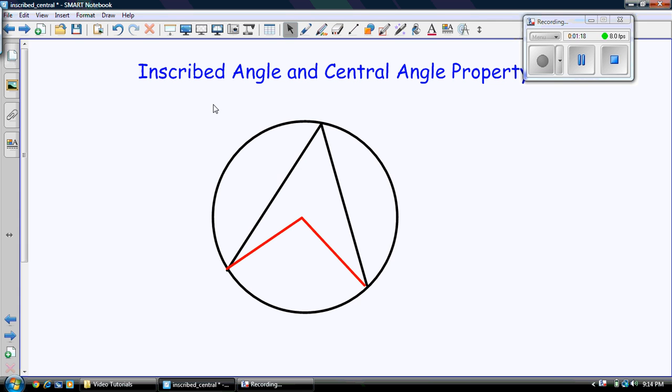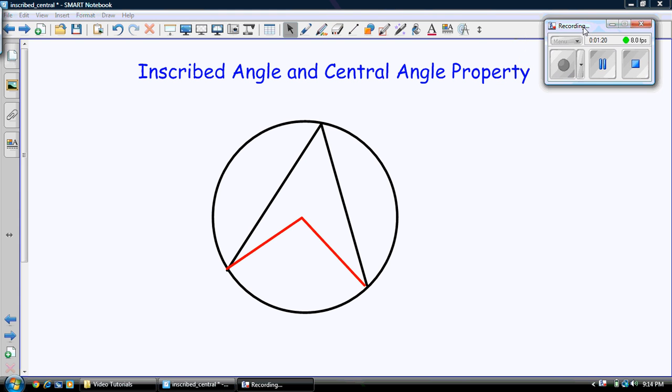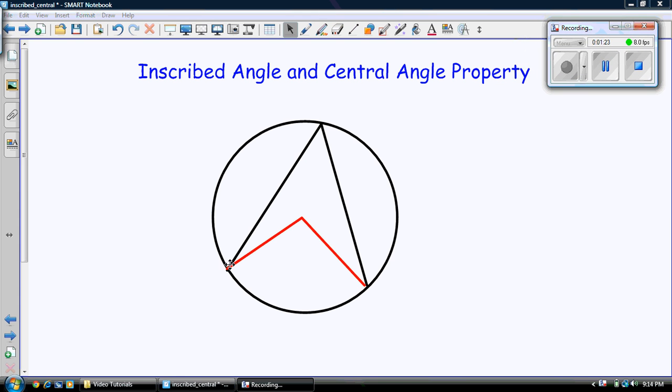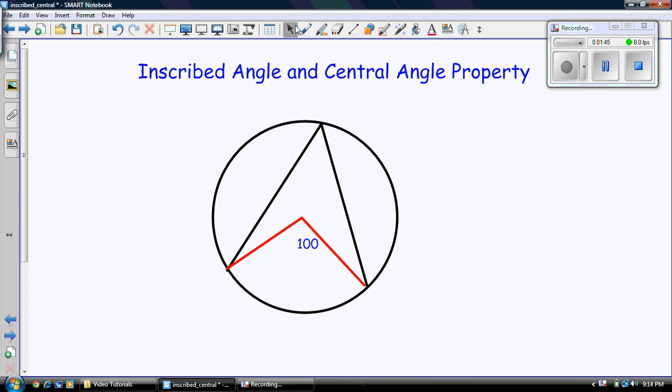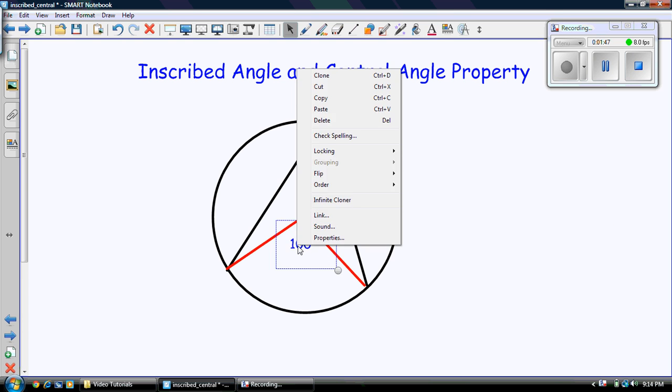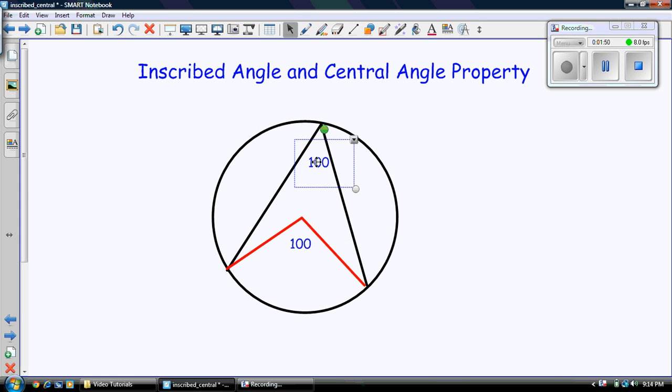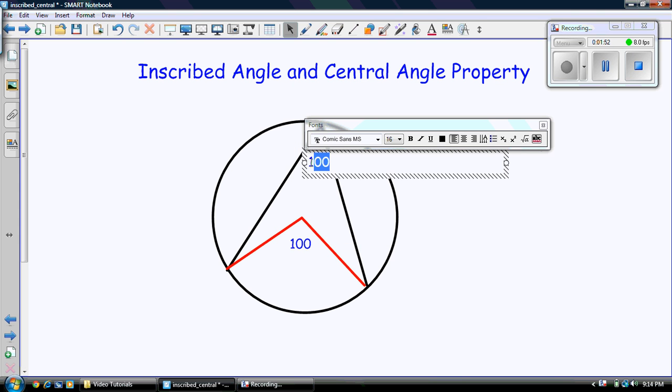Alright, so let's have a look at the inscribed angle and central angle property. If you see, we have here the red one being the central angle, its vertex is at the center. And the black one here, the inscribed angle, its vertex on the circle. So let me just give these a couple of values here. So I'll call this one, let's make up an easy number here, 100, 100 degrees for that one. And I'll call the next one 50. And that's not 5. Okay?